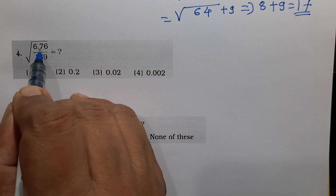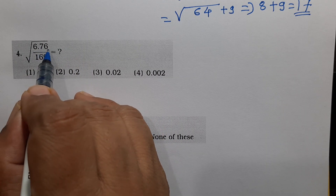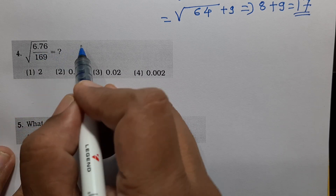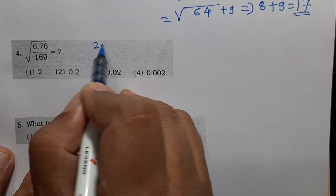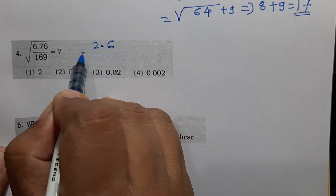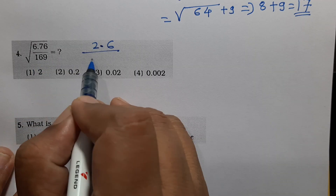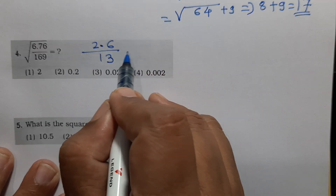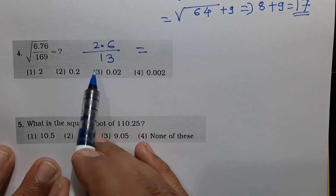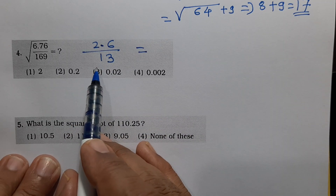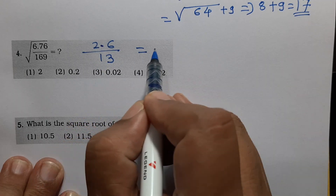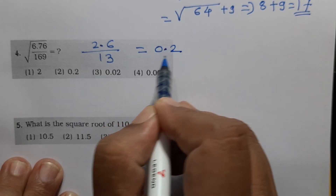Question 4: Find the square root of 6.76. The square root of 6.76 is 2.6. Dividing confirms: 2.6 times 2.6 equals 6.76. Answer: 2.6. Option number 2.